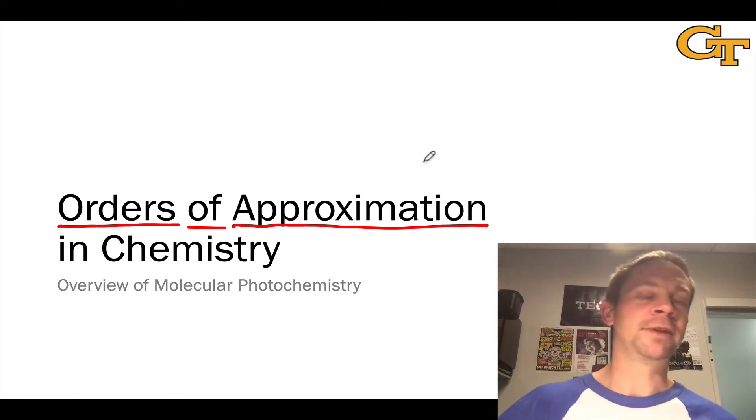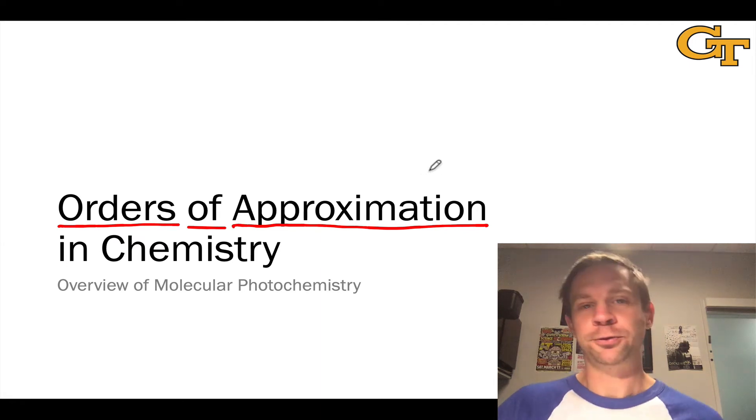Solving the Schrödinger equation for anything bigger than the smallest of molecules is going to be impossible, so we have to make approximations in order to get an idea of the quantum structure of a molecule. But those approximations under certain circumstances do break down.